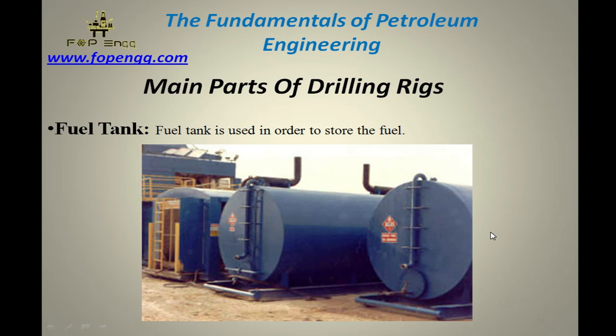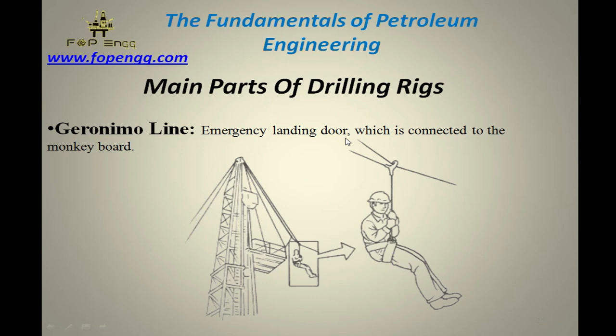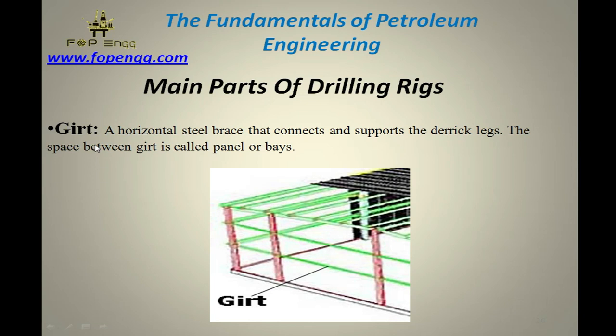Geronimo line — this is basically an emergency escape line connected to the monkey board. In case of any emergency, the person will connect his harness and slide down toward the ground. Girt — a horizontal steel brace that connects and supports the derrick legs. The space between girts is called a panel or bay. Girts are basically used for support, similar to their use in scaffolding.